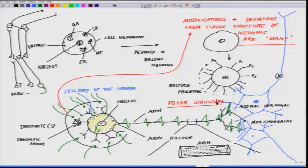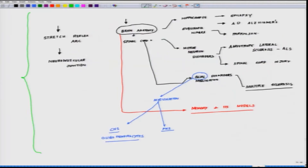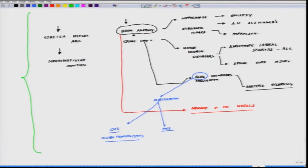With that brief background, I will now move on. This is Week 6, Lecture 2. Let me move on to the anatomy of the brain — what the brain anatomy really looks like — because that detail I have not dealt with you yet. Let us go ahead with the brain anatomy first.